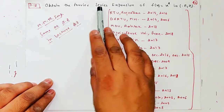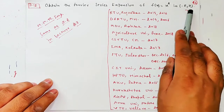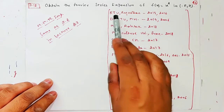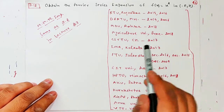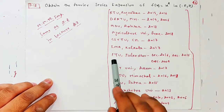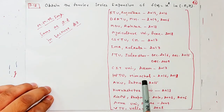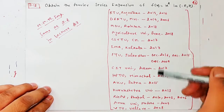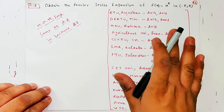Obtain the Fourier series expansion of function x² in minus pi to pi. Yeh question almost har universities mein aa chuka hai — MDU, Agriculture University Pune, CSBU, IMA Kolkata, PTU Jalandhar, CIT University Assam, HPU Himachal, AKTU, Patna, Kurukshetra University, RGPV, Anna University, VTU, aur bhi kaafi universities mein. Toh thoda dhyan se dekhiyega, most important question hai.